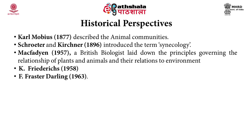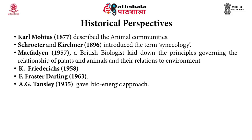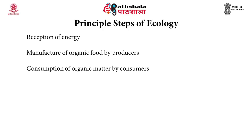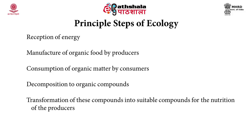F. Fraser Darling in 1963 defined ecology as 'the science of organisms in the interrelationship of organisms in relation to the total environment and the interrelationship of organisms interspecifically and between themselves.' A.G. Tansley in 1935 introduced the term ecosystem and led to the development of concepts of productivity and the nature of energy relations in ecology, now referred to as the bioenergy approach. The principal steps of ecology are: first, reception of energy; next, manufacture of organic food by the producer; then, consumption of organic matter by consumers; then decomposition of organic compounds; and lastly, transformation of these compounds into suitable compounds for the nutrition of the producers.